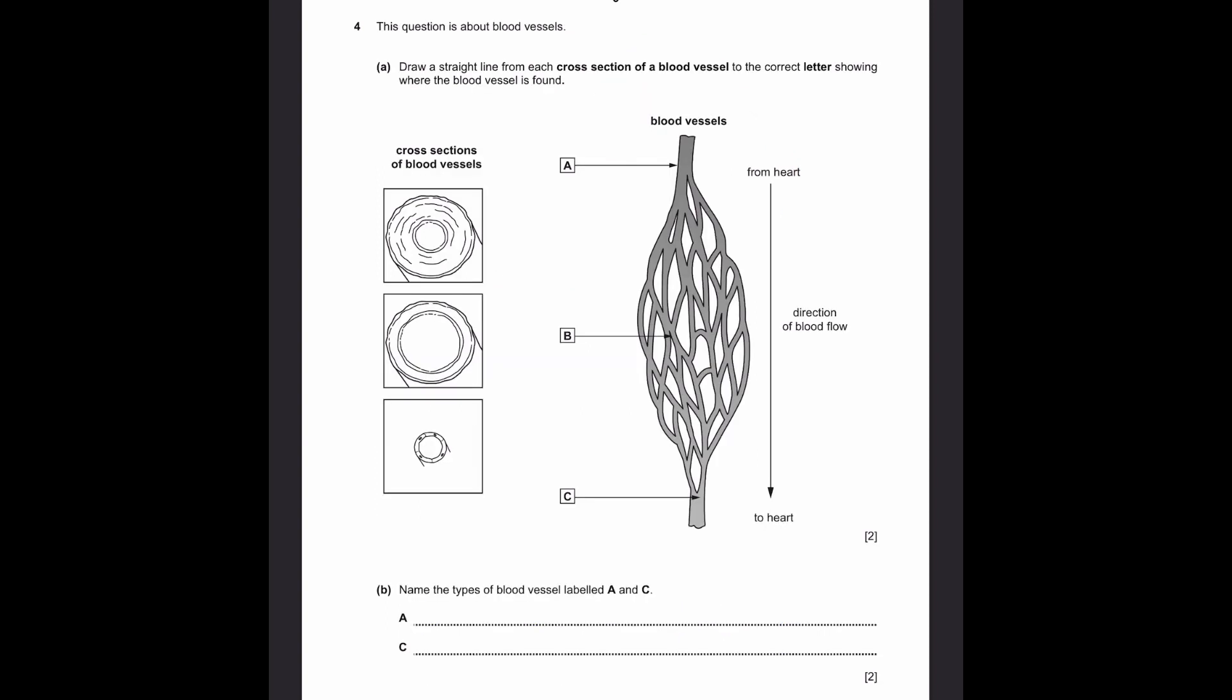Question four. This question is about blood vessels. A. Draw a straight line from each cross section of a blood vessel to the correct letter showing where the blood vessel is found. Over here, we can see the first one, cross section of blood vessel, which means when you cut it out, it'll look like this. So over here, we can see that there's a small circle of travel of blood and around it, there's a muscular wall. That signifies that it is blood from the heart. And that means this option goes to A.